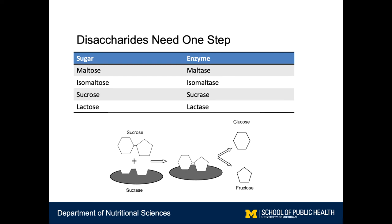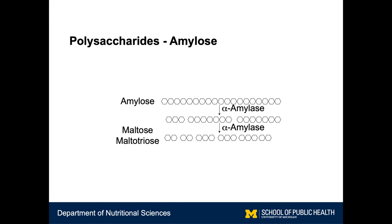In the case of disaccharides, one step is needed. There's one glycosidic bond, and that glycosidic bond is broken down by specific enzymes such as maltase for maltose and sucrase for sucrose. Shown below, you can see sucrase, which is present on the brush border of the small intestine, can break the glycosidic bond in sucrose, releasing glucose and fructose. These monosaccharides are then able to be absorbed and used by our bodies.